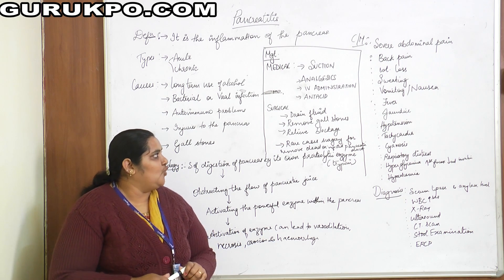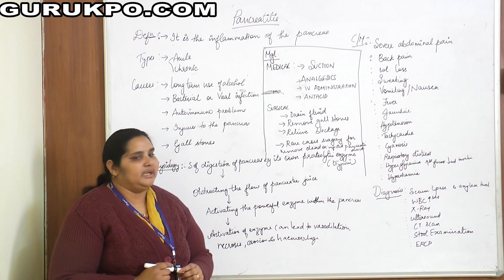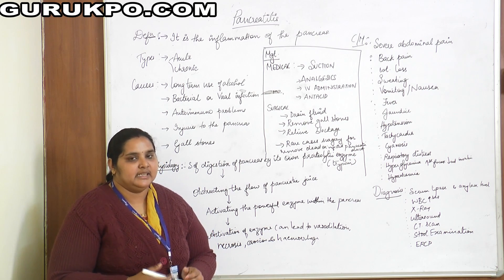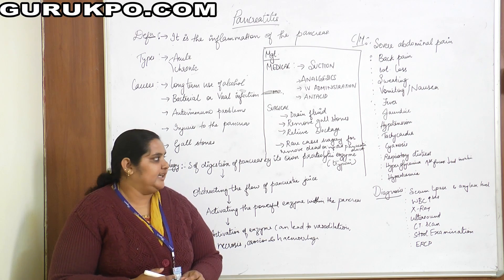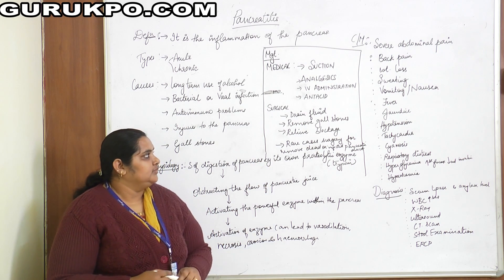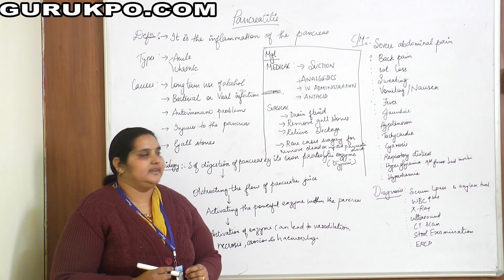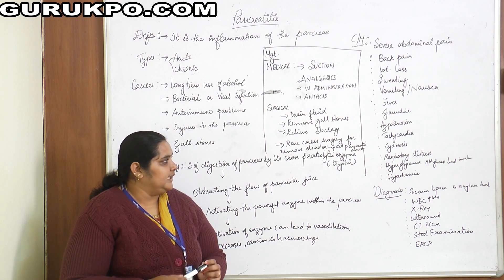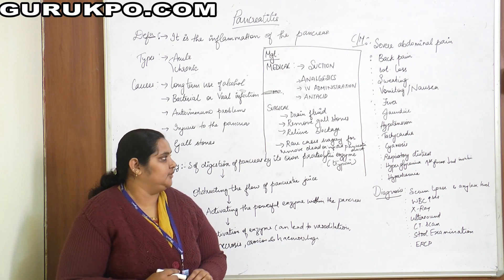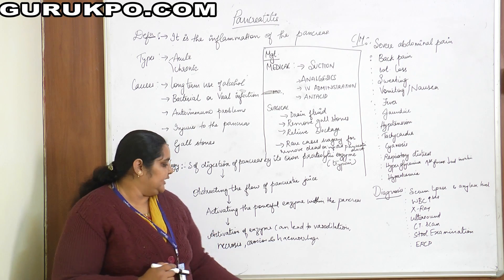Then sweating — the patient may have excessive perspiration, also called hyperhidrosis. There will be nausea and vomiting — nausea is the sensation of wanting to vomit, and vomiting occurs due to fullness of the stomach from gastric contents and pancreatic juice. The patient may also have fever due to inflammation, and jaundice.